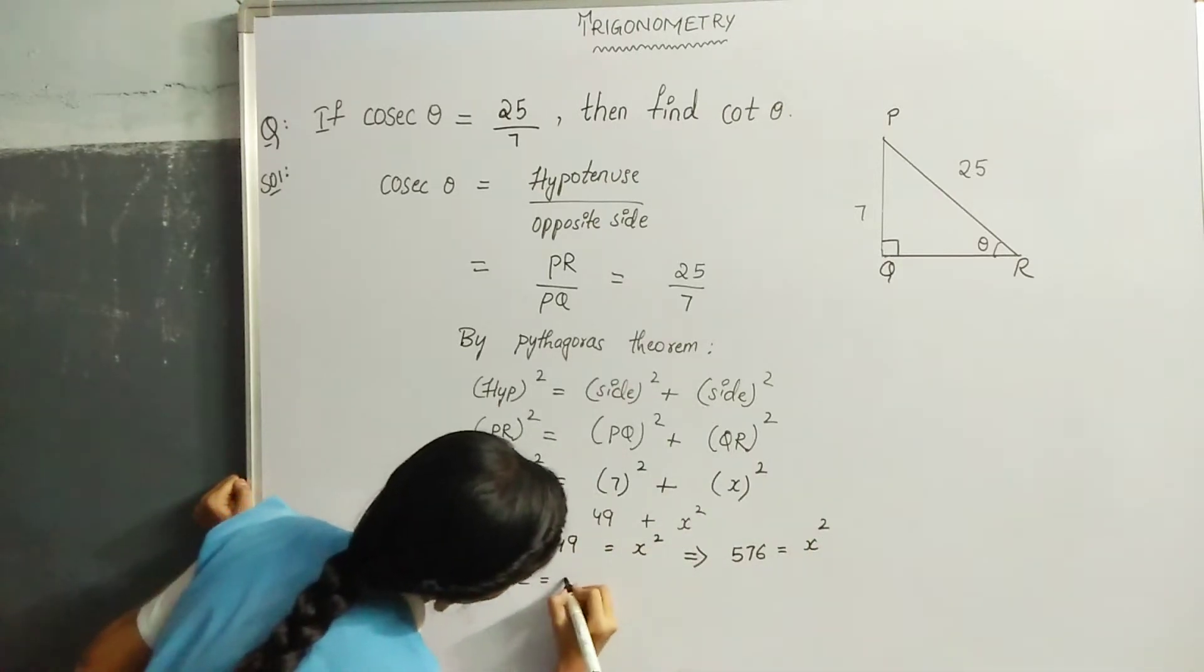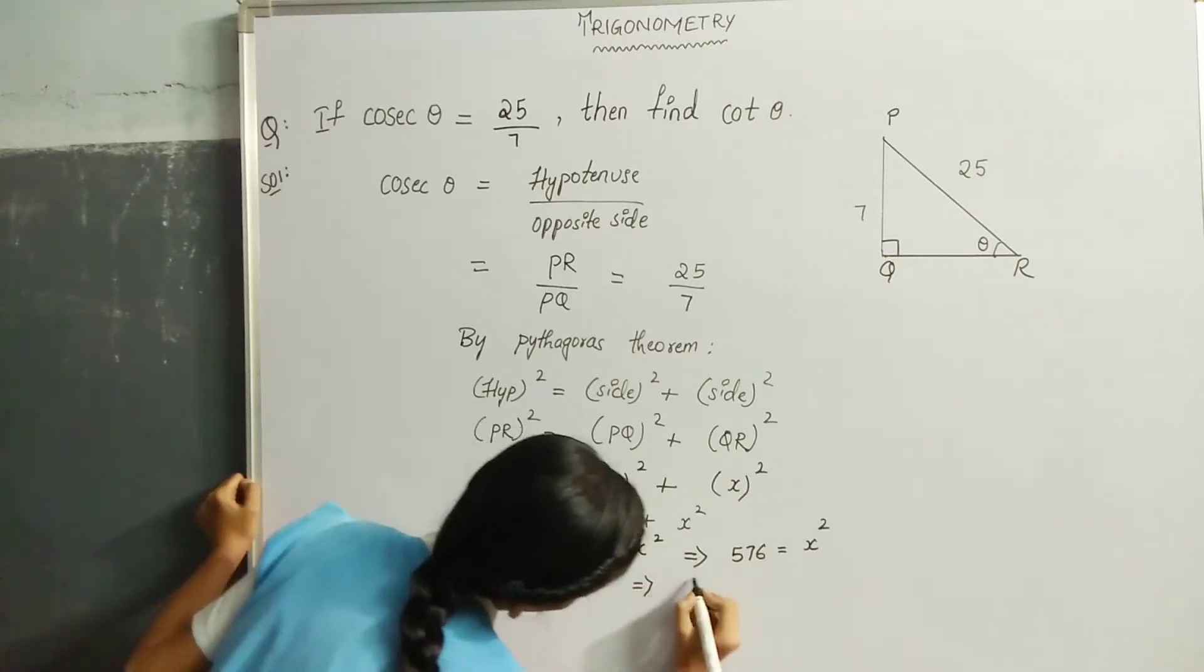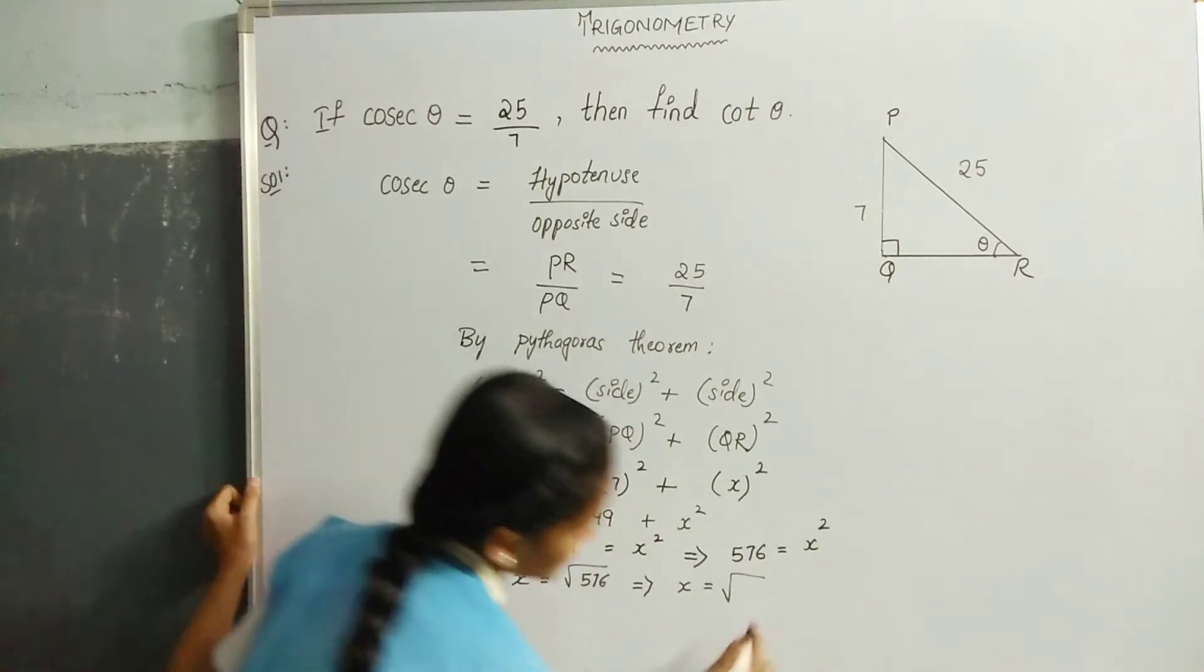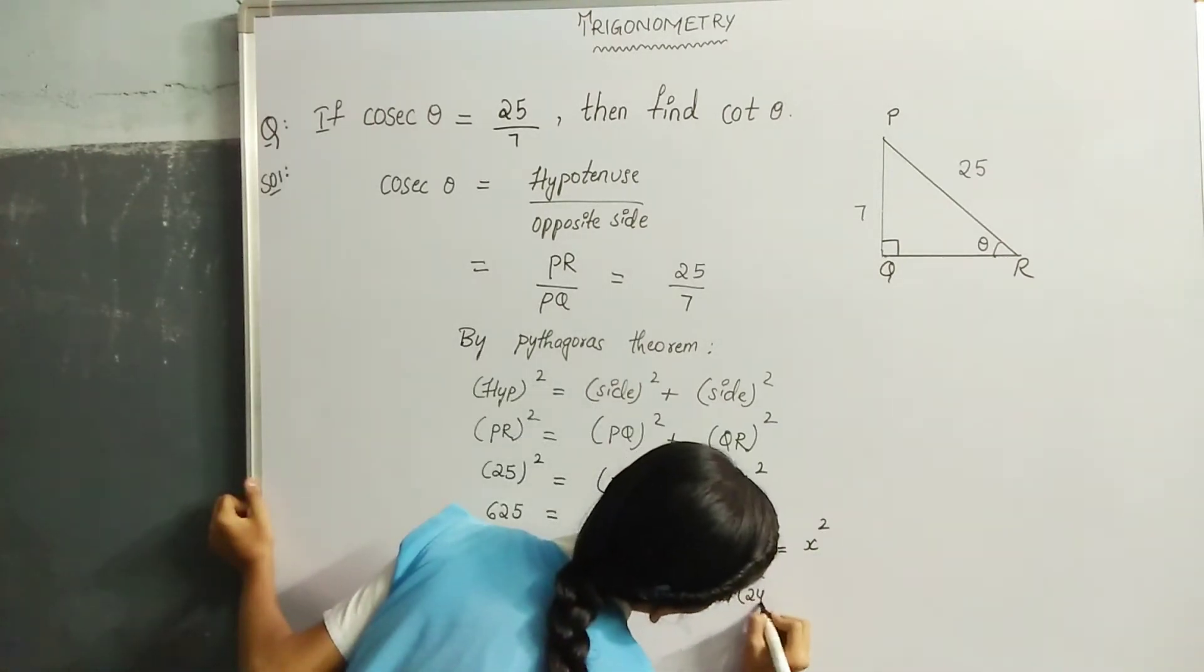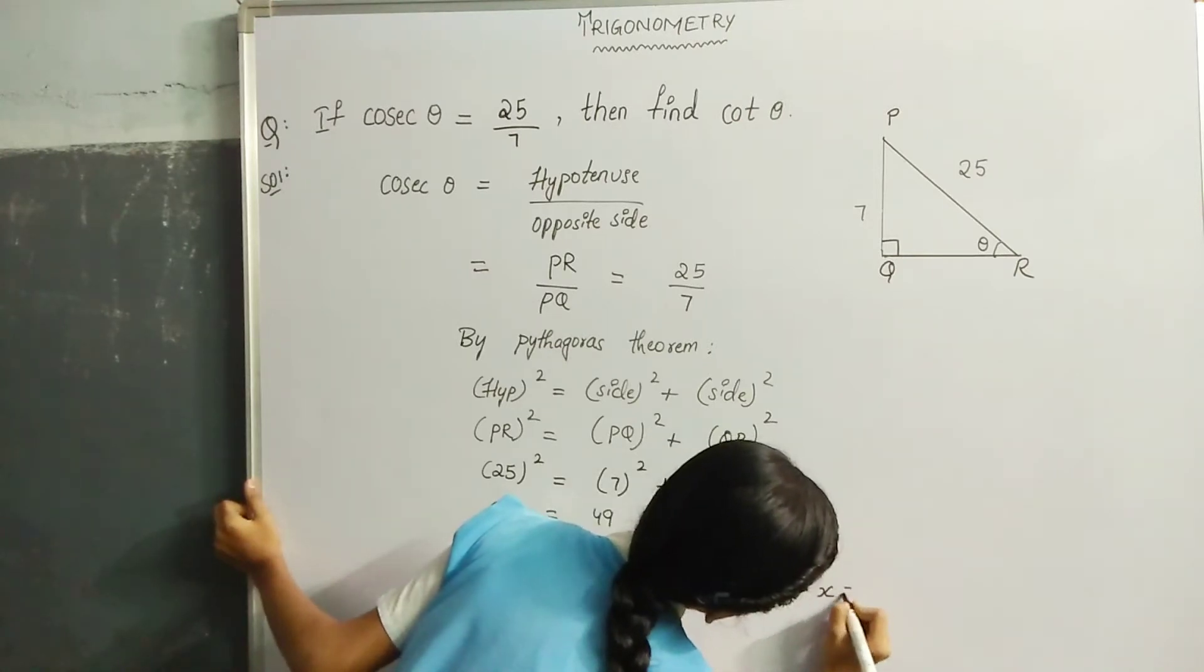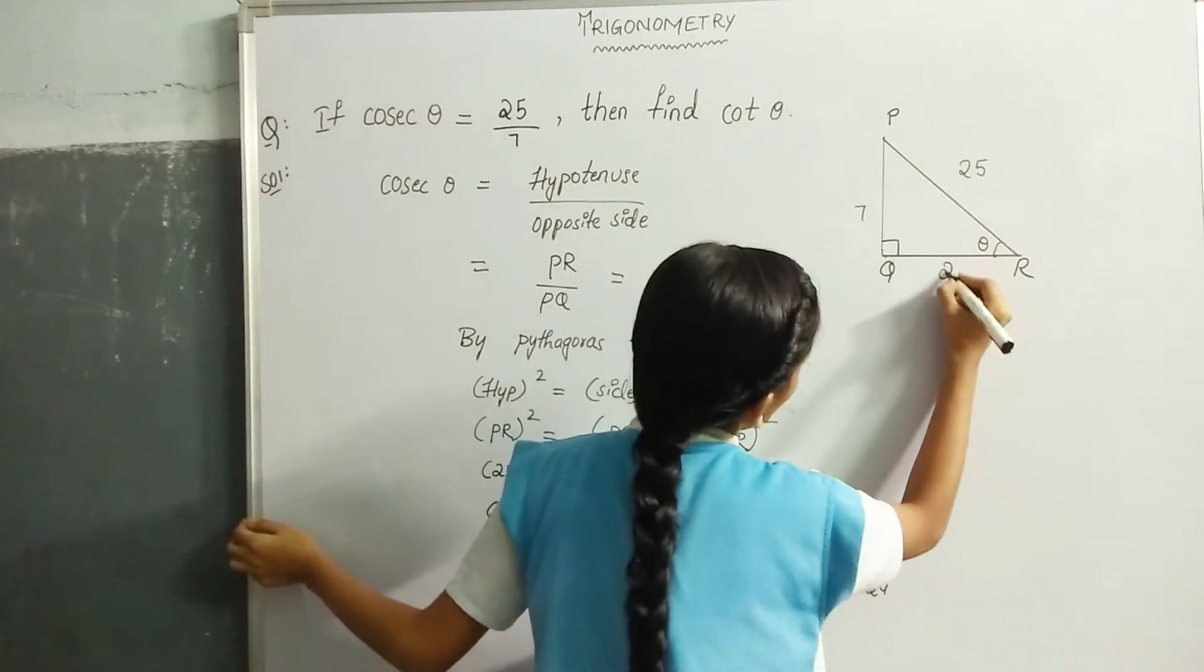X is equal to root 576. That implies X is equal to root 576 can be written as root 24 whole square. Square and root gets cancelled, X is equal to 24 and QR is 24.